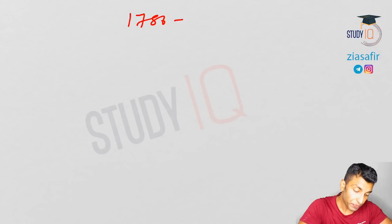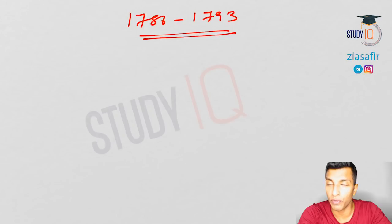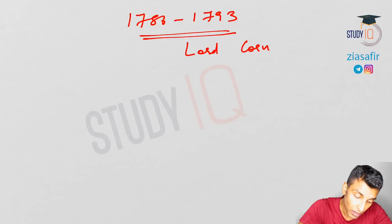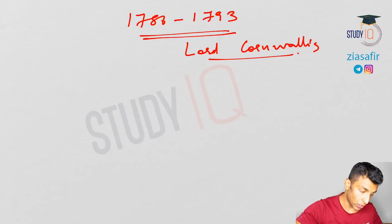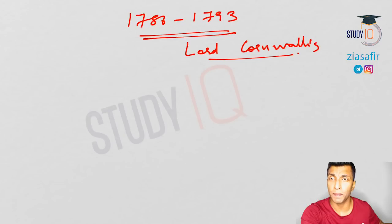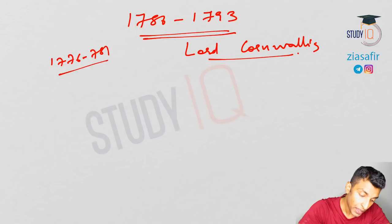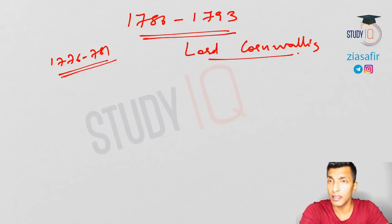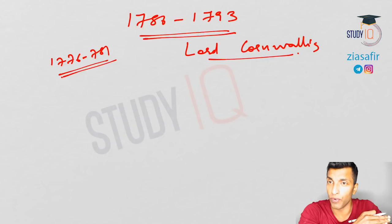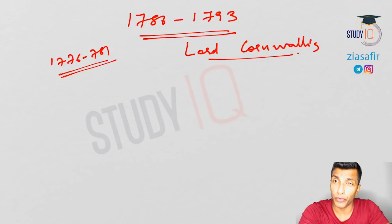This period is during the time of Lord Cornwallis. He is actually the second Governor General after Lord Warren Hastings. Lord Cornwallis was the person leading the battle from the English side in the American War of Independence, during 1776 to 1781. Interestingly, the person who was a failure in that war came to India and had a big success story to write.